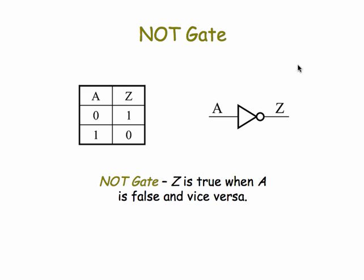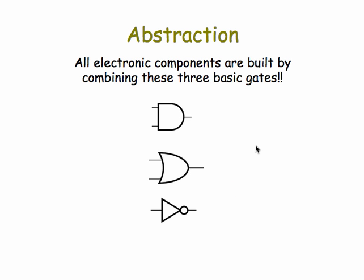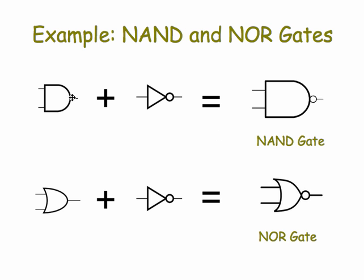Finally, we have another basic electronic component, the NOT gate. The NOT gate simply reverses its input. If the input is false, it makes it true. If it's true, it makes it false. Amazingly, all electronic components are built out of these three basic gates. For example, the NAND gate is a combination of the AND gate and a NOT gate. Similarly, a NOR gate is a combination of a OR gate and a NOT gate. So as you can see, we can build up bigger abstractions by combining together our lower-level abstraction.